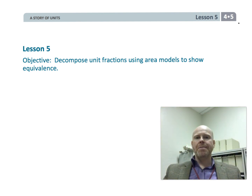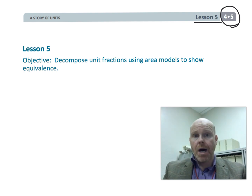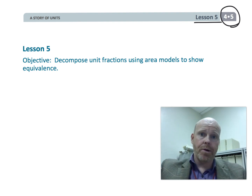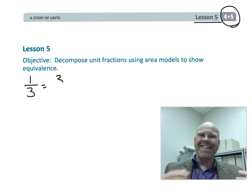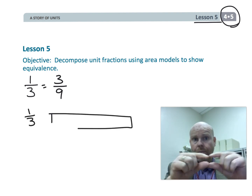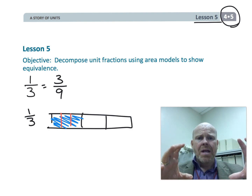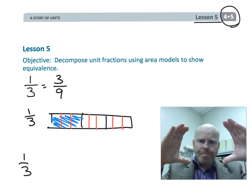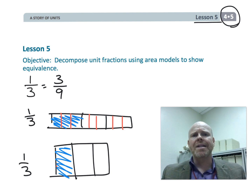This is fourth grade, module five, lesson five. In this lesson, students are going to continue using visual models to represent two equivalent fractions. For example, one-third is equivalent to three-ninths. The difference from the last lesson is that last time we used tape diagrams, but this time we're going to use more of an area model — imagine a square being chopped up like a brownie and then cut into smaller pieces.